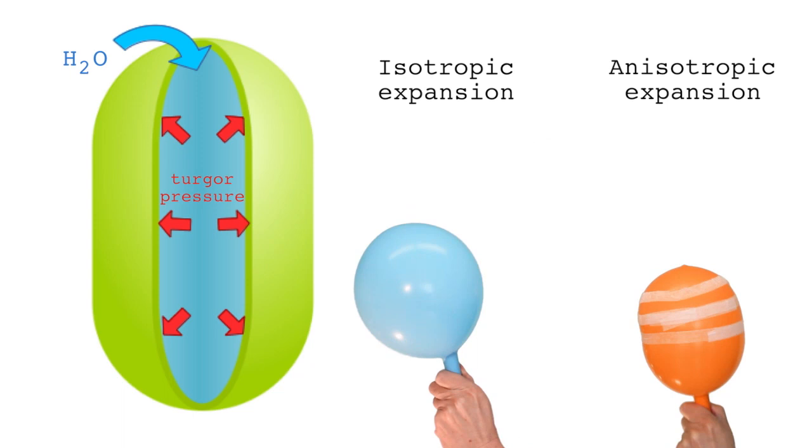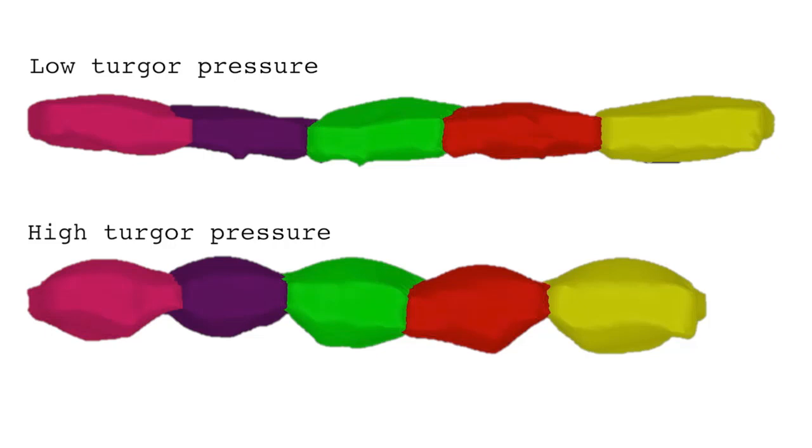Most cells are anisotropic. They resist extension differently in different directions. In that case, an increase in turgor pressure can lead to an expansion in one direction and a contraction in another direction.